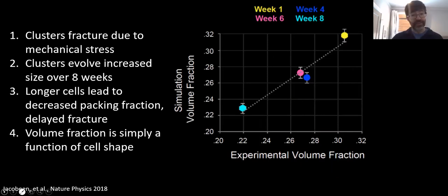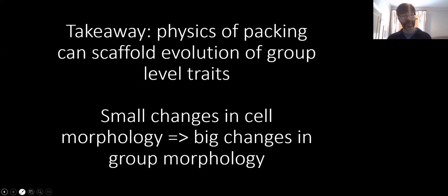Interestingly, we found that the volume fraction emerges very simply from cell shape. We constructed a very simple bare bones geometrical model of how snowflake yeast grow. There's no mechanics in this model. It just follows the budding pattern of snowflake yeast with only the cell shapes as a numerical input. But with just that information, these simulations are able to capture the experimentally observed volume fractions nearly perfectly. What I want you to take away from this is that the physics of packing can scaffold the evolution of group-level traits. Change the way that cells pack inside snowflake yeast and you change the size that these clusters grow to. Small changes in cell morphology can lead to outsized large changes in the group-level morphology, again through emergence.